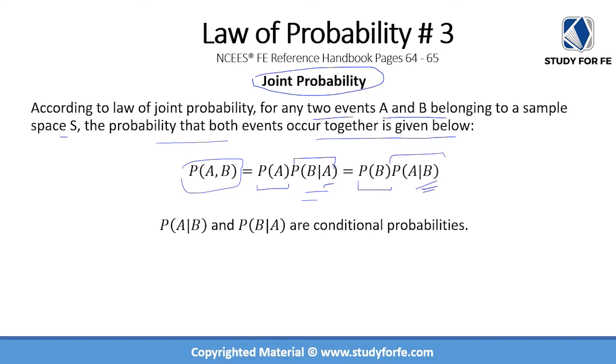Probability of A slash B and probability of B slash A are basically the conditional probabilities, and they will come into play when we discuss Bayes' theorem in the next lecture, which is probably the most confusing component of probability in the context of the FE exam.